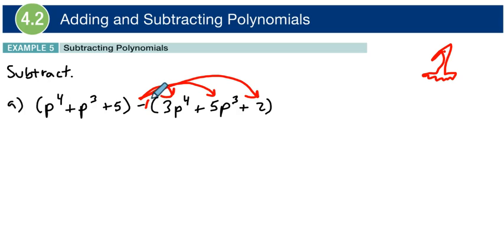So basically what that means is negative 1 times 3P to the power of 4 is negative 3P to the power of 4. Negative 1 times a positive 5P cubed is a negative 5P cubed. You see? And a negative 1 times a positive 2 is a negative 2. So this is really what we're going to combine now with this, and I'm going to just drop all this down. P to the power of 4 plus P cubed plus 5.